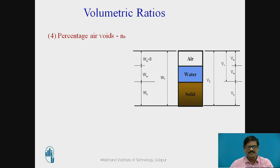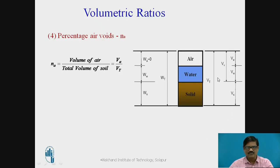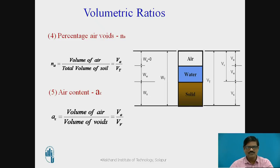The next property is percentage air voids, represented by Na, given by the ratio of volume of air divided by total volume of soil — that is Va upon Vt. The next property is air content, denoted by small ac, which is the ratio of volume of air to the volume of voids — that is Va upon Vv.